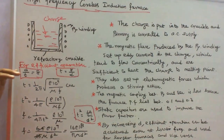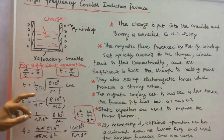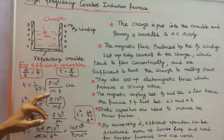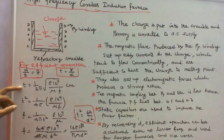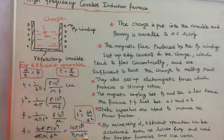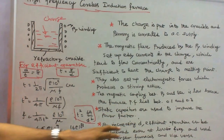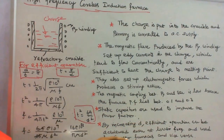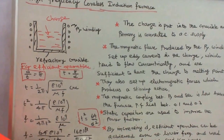Static capacitors are used to improve the power factor. For efficient operation, D/T = 8, so T = D/8. Substituting into the penetration formula gives: F = (16 × ρ × 1049) / (π × μ × D²). By increasing D, that is the diameter of the charge, efficient operation can be achieved, and this formula is used for larger furnaces. The inverse holds for smaller furnaces.